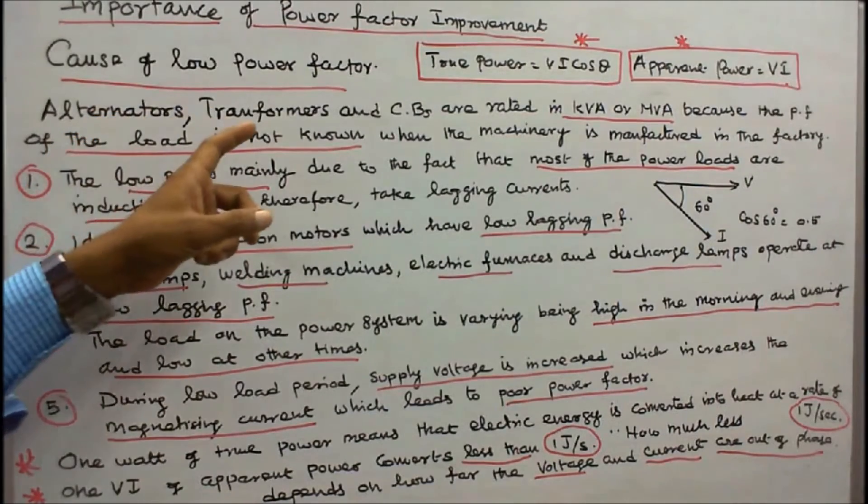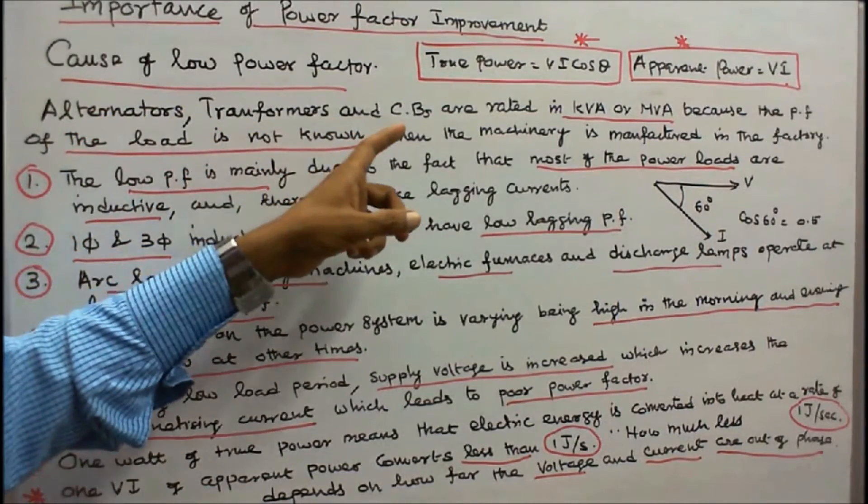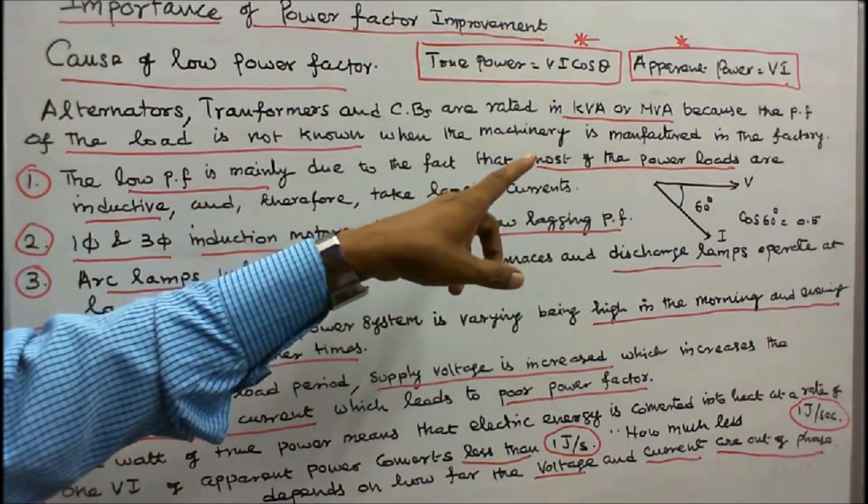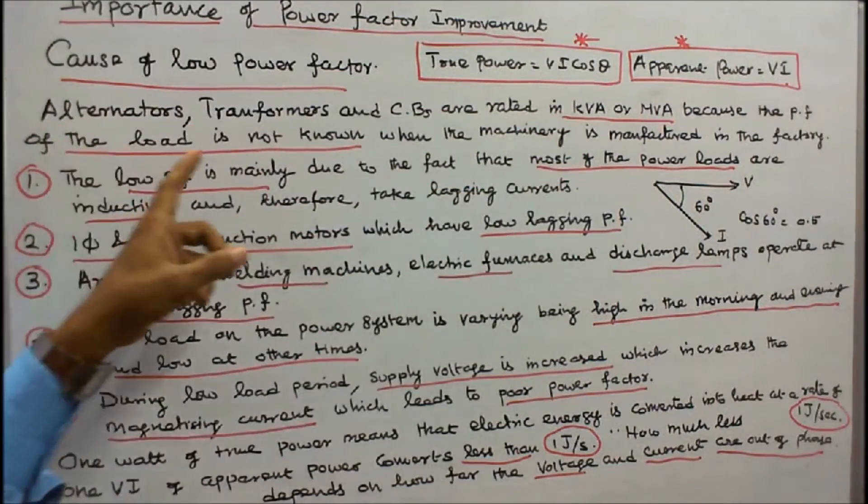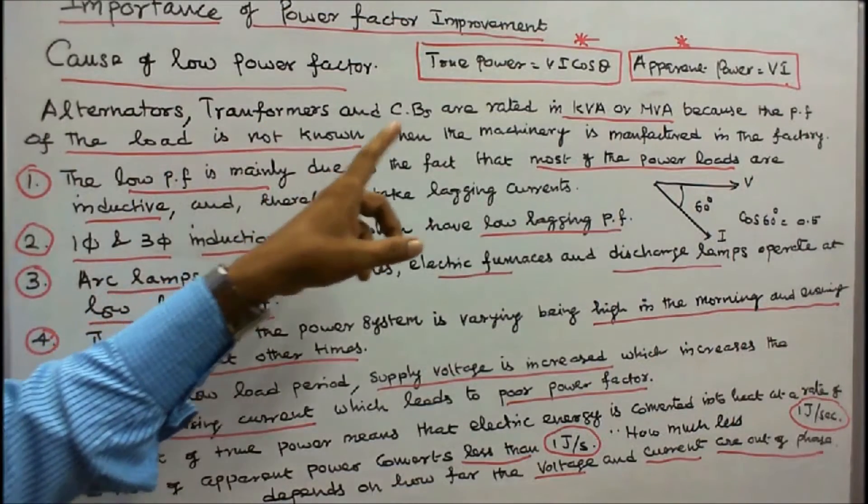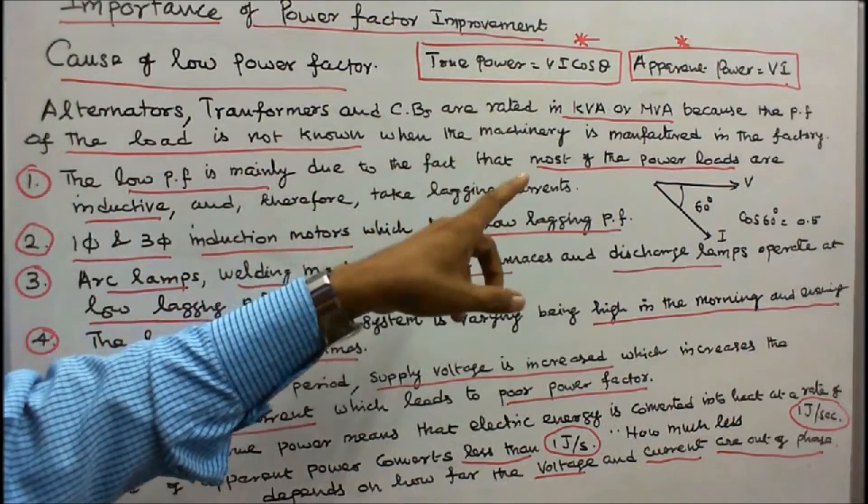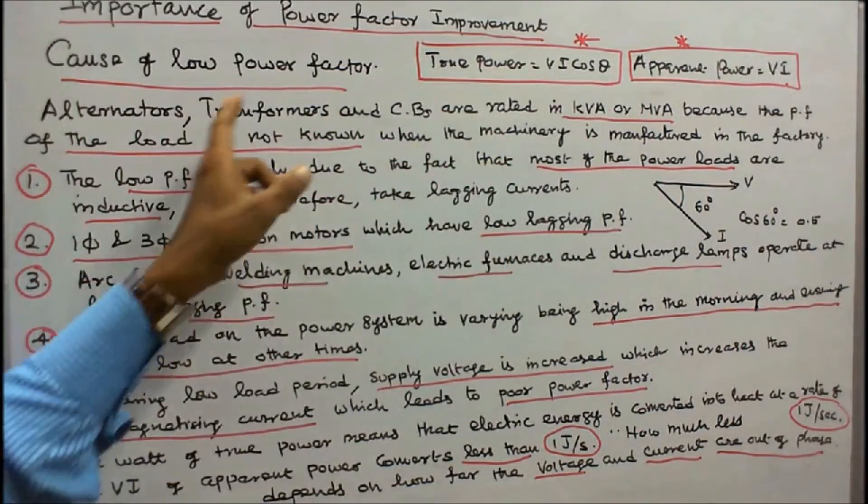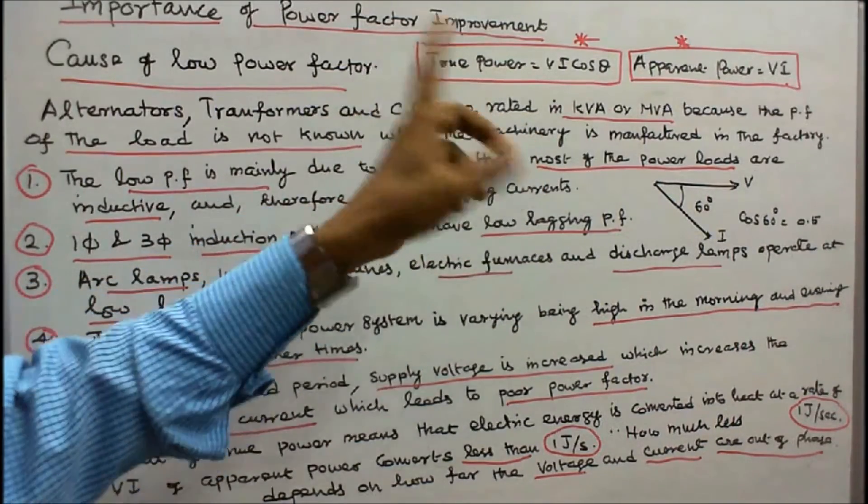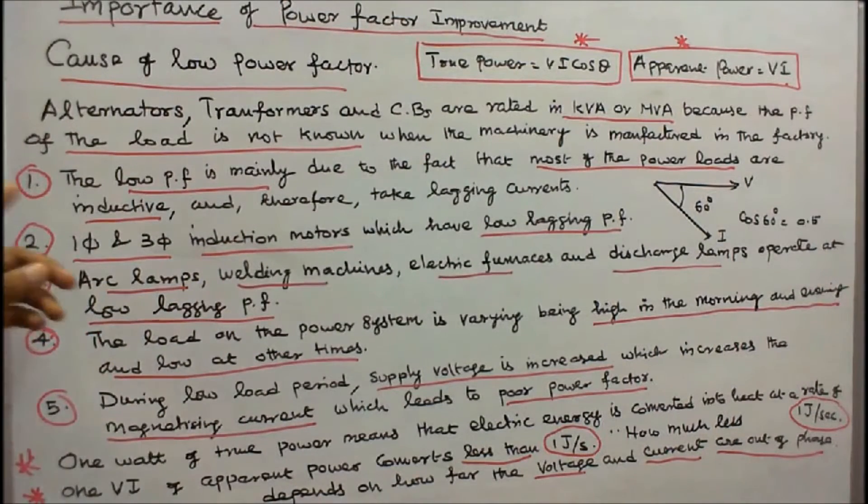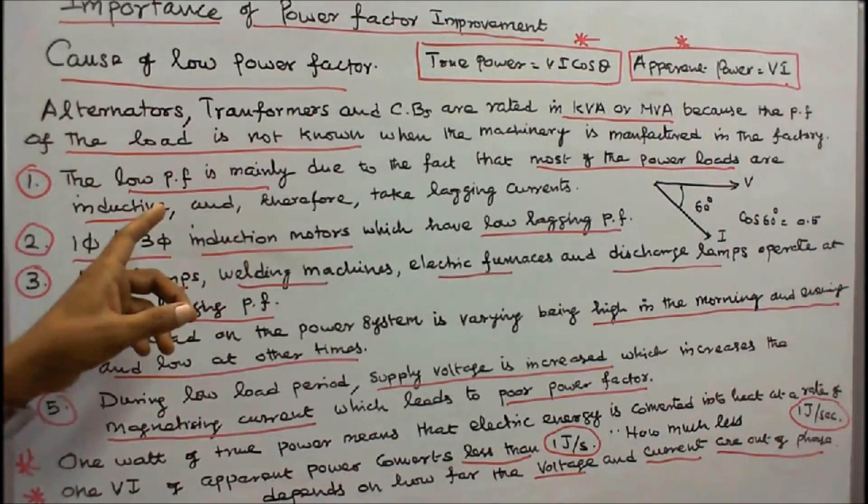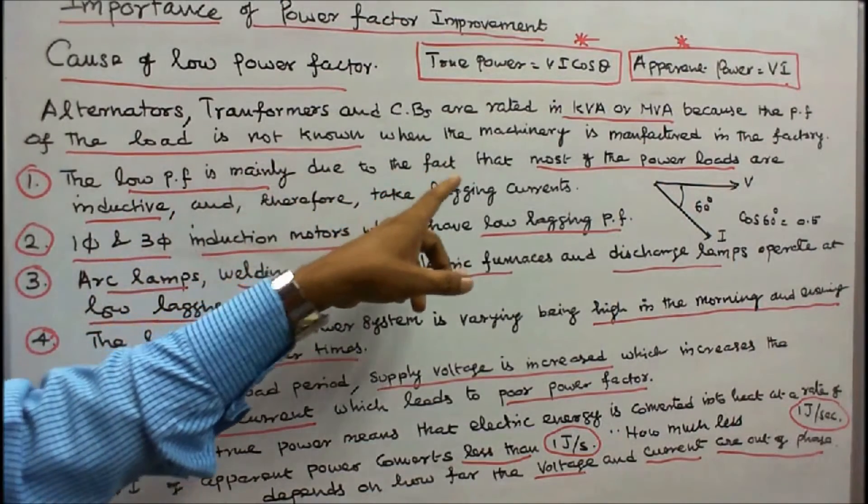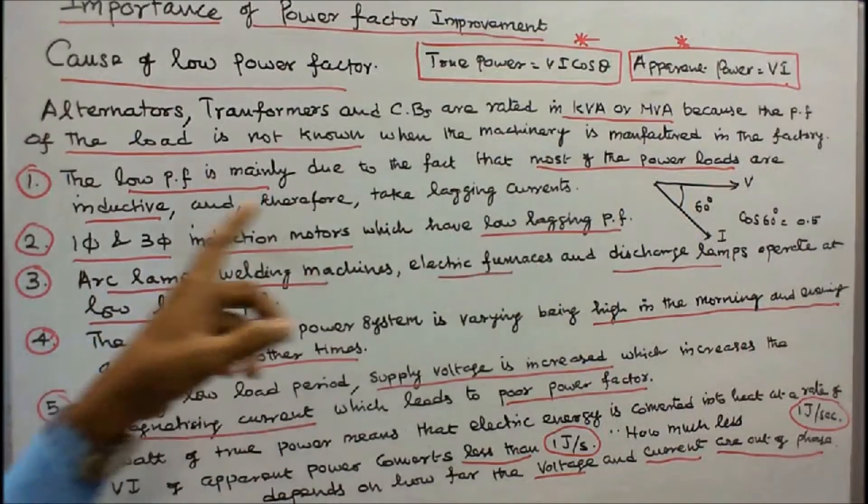Alternators, transformers, and circuit breakers are rated in kVA or MVA because the power factor of the load is not known when the machinery is manufactured in the factory. That is the reason they are rated in kVA or MVA.